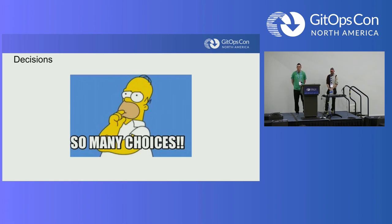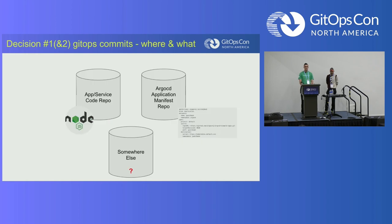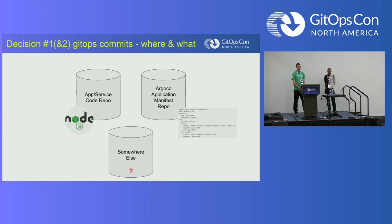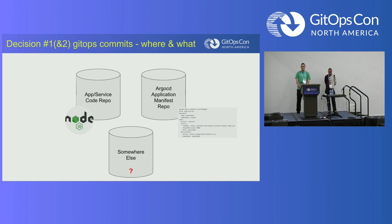After we landed on using Argo CD, we had a bunch of decisions to make. First: where do we make those GitOps commits? As Raptor mentioned, we have about 100 services, each in their own application repo. In those application repos, we're using Helm, so they have a Helm chart plus values files for both staging and production.